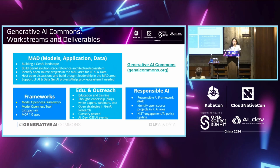We currently have four work streams right now. The first one is called MAD, representing Models, Applications, and Data. We work on projects in this space. Currently we're building a Gen AI landscape, and later we're going to build a reference architecture, solution stack, and ecosystem.